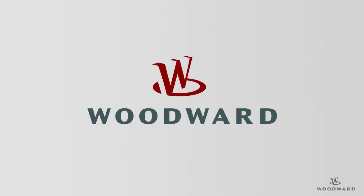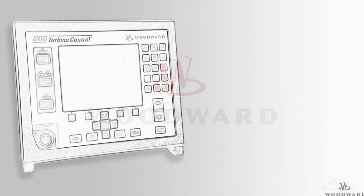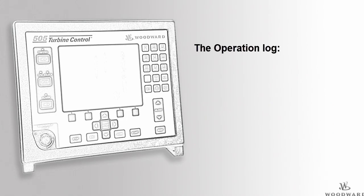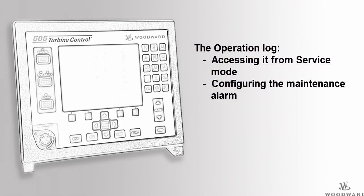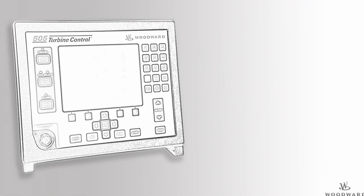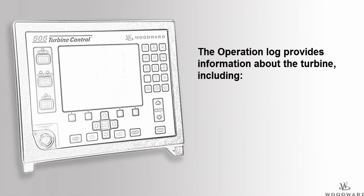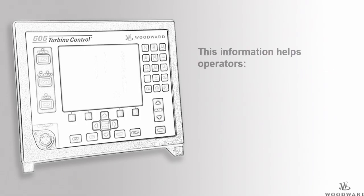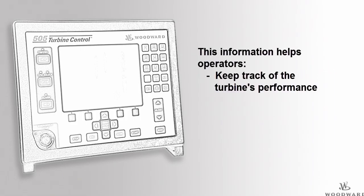Hello and welcome to the 505 tutorial for the operation log. In this tutorial you will learn the basics of the operation log, including how to access it in service mode, configure the maintenance alarm, and reset the maintenance alarm. The operation log provides information about the turbine such as starts, trips, and runtime hours.